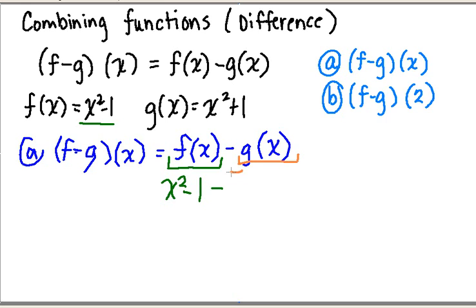I know that g of x is x squared plus 1. The only watch out here is I want to make sure that my negative sign goes in front of this entire term. In other words, I'm going to have to distribute my negative sign to x squared plus 1. So I'm going to write it in parenthesis.